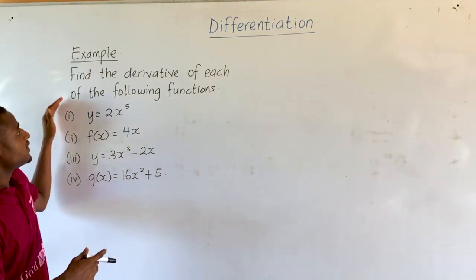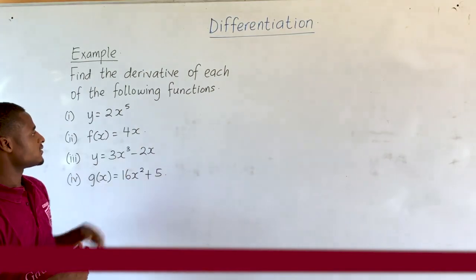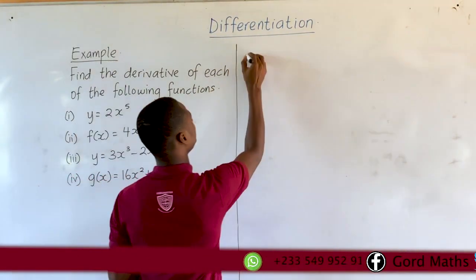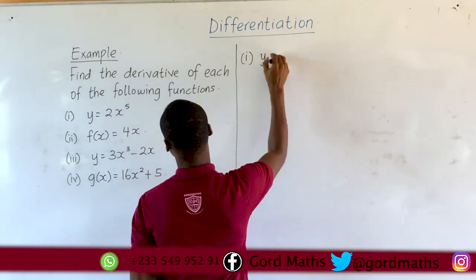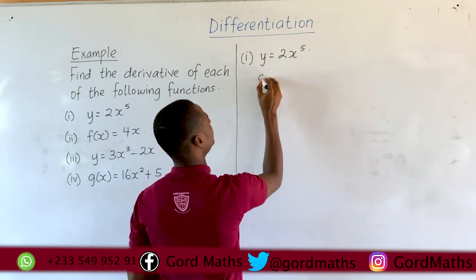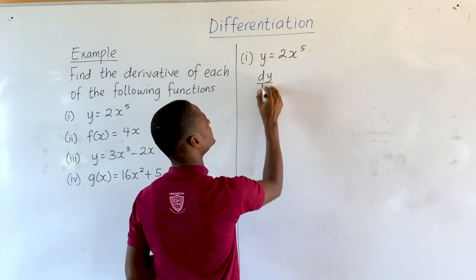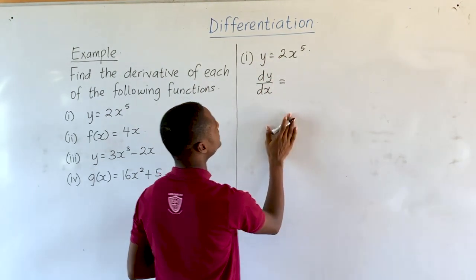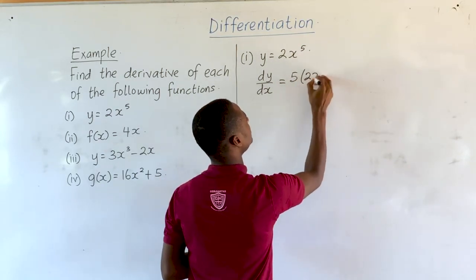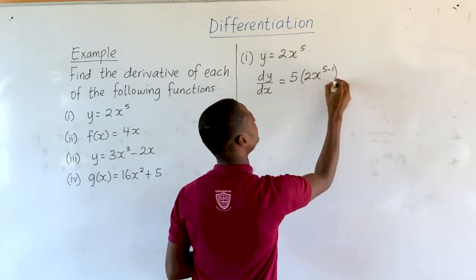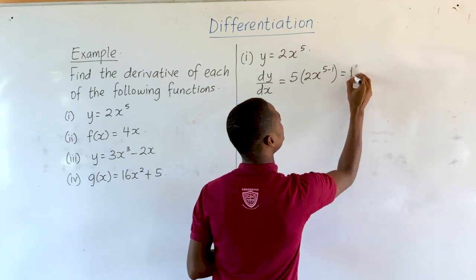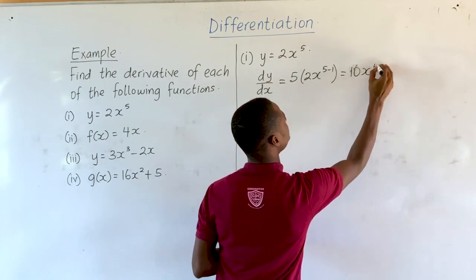We will take further examples. Find the derivative of each of the following functions. The first function: y is equal to 2x raised to the power 5. Therefore dy/dx, using the general principle of differentiation, is 5 times 2x raised to the power 5 minus 1, which gives us 10x raised to the power 4.